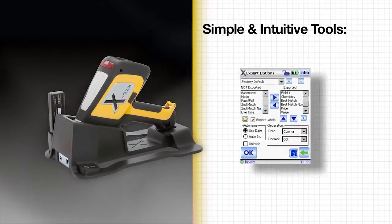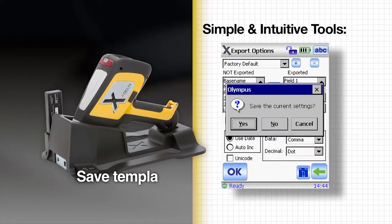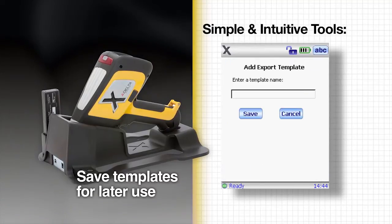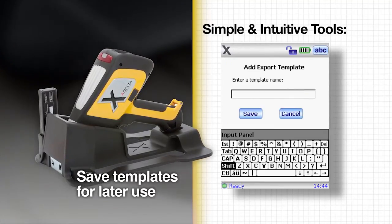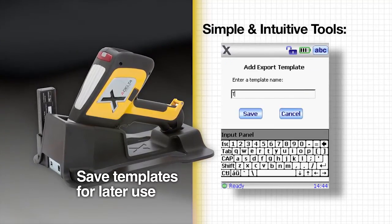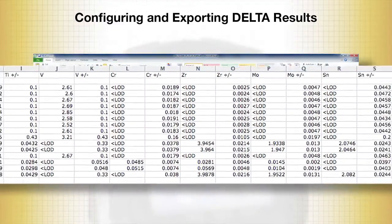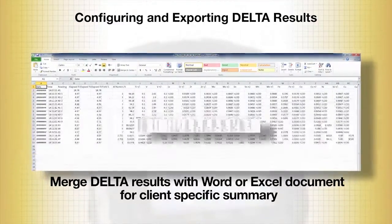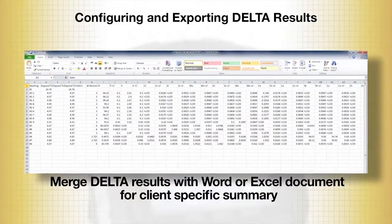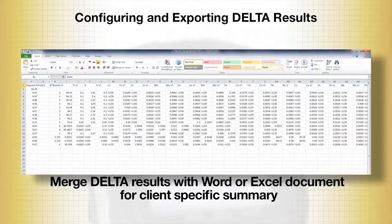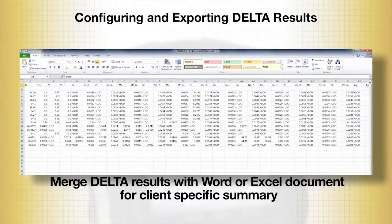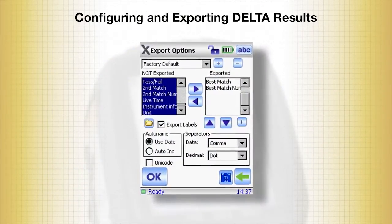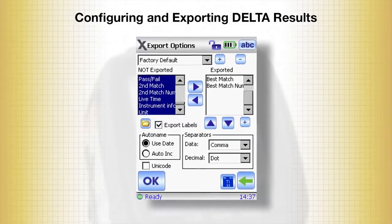If your organization requires more than one reporting format, you can easily save templates for later use. You can then seamlessly merge the Delta export results with a Word or Excel document to create a client-specific summary. The following example shows you how to create a custom report.